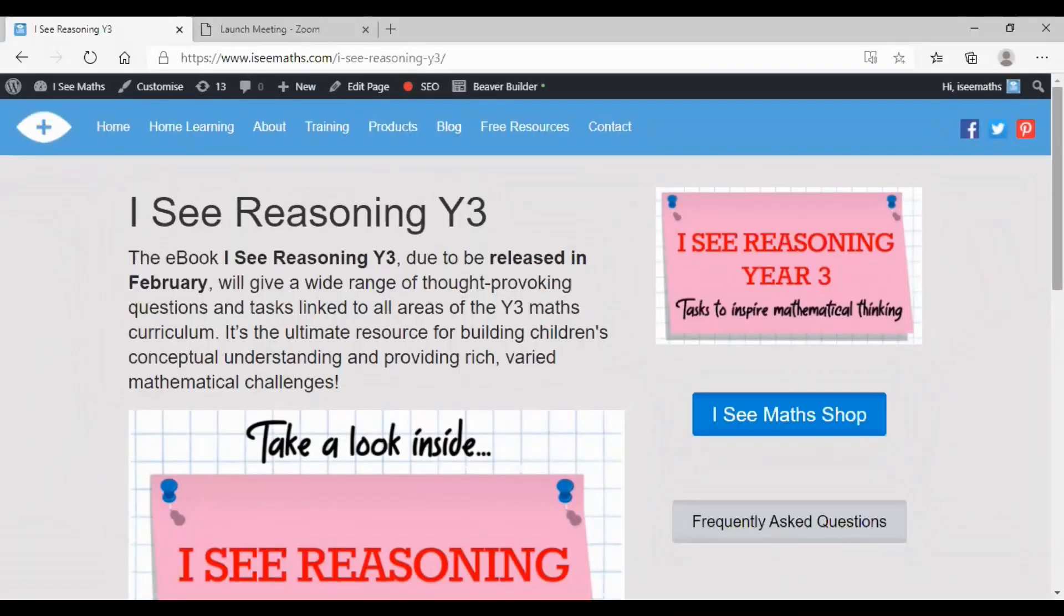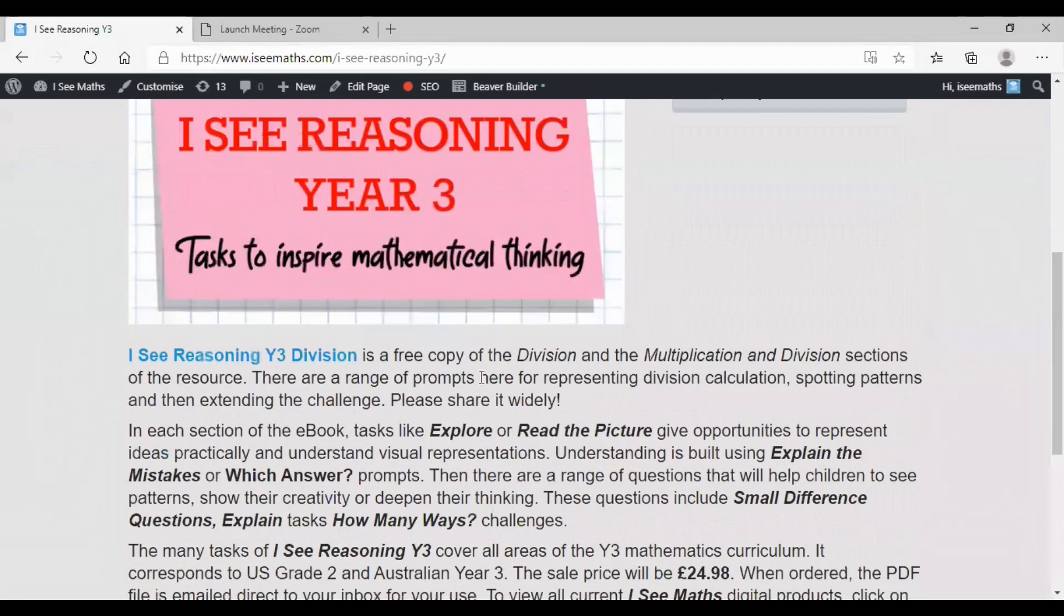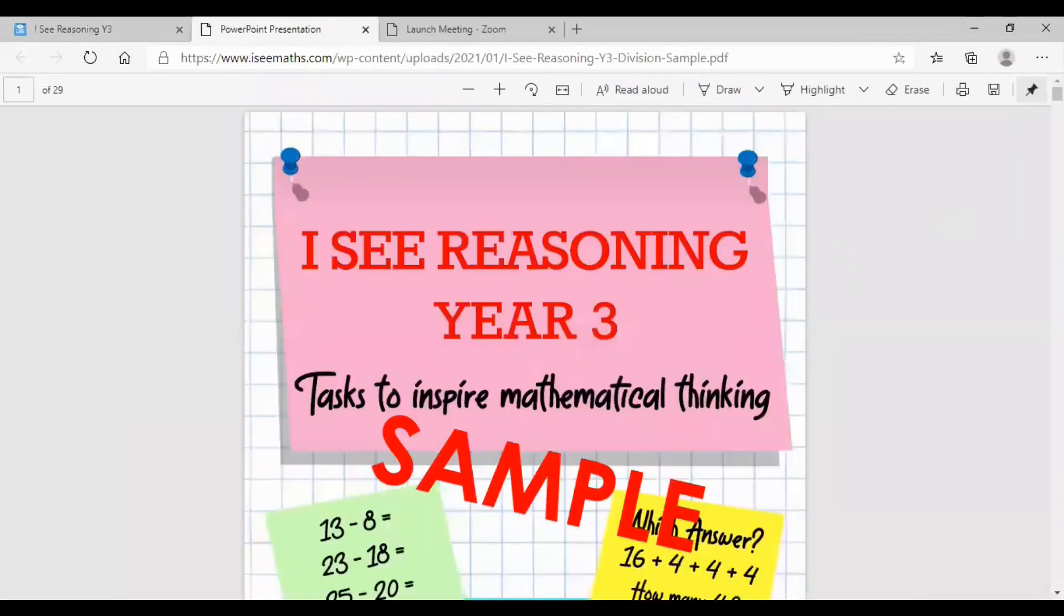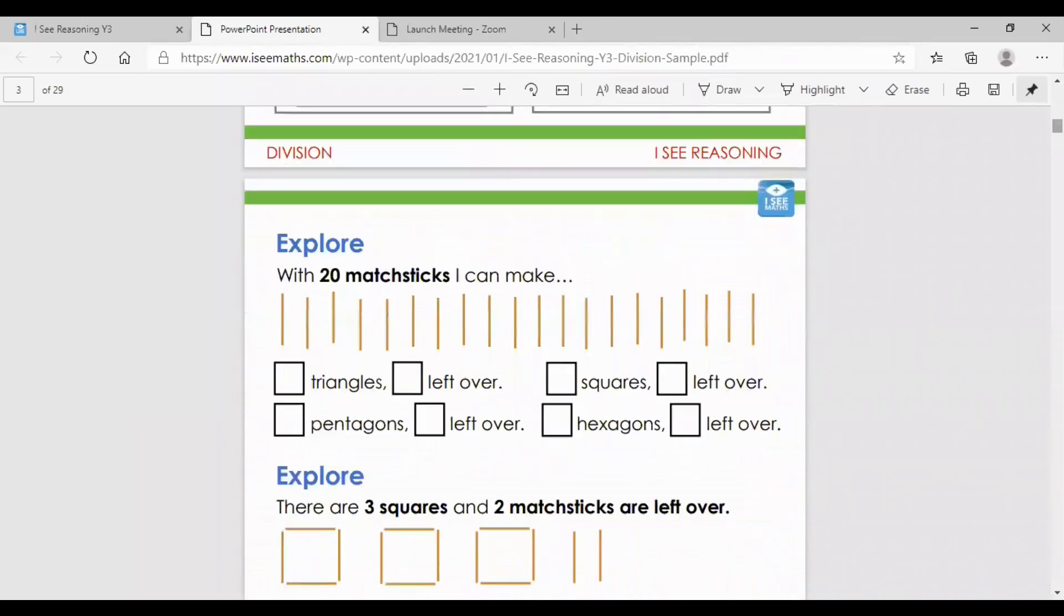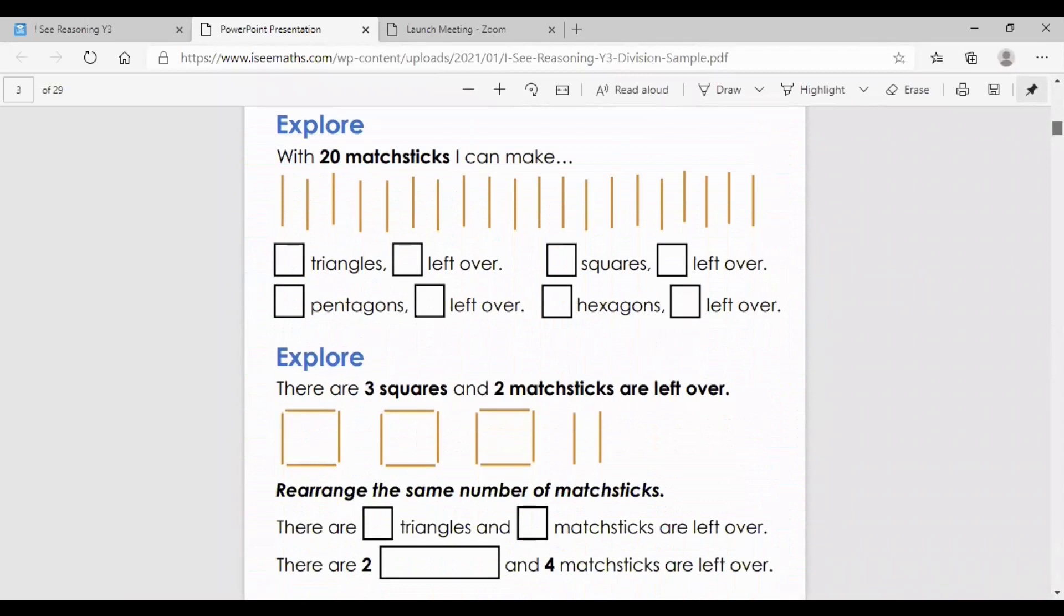To access the free sample section of IC Reasoning Year 3, just scroll underneath the video and click on the blue link. Then all of the questions can be either screenshot or printed, and the answers are at the bottom of the section.